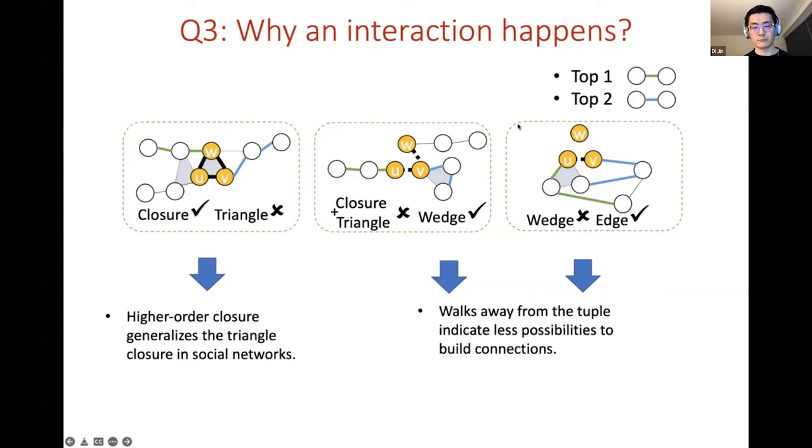On the other hand, if we see a lot of walks that start from node u and v and tend to jump away from these two nodes, it may indicate less probability or possibilities that the three nodes may build connection later. Like in the second figure here if we see a lot of such green or blue walks we know that wedge pattern is more likely to happen compared to either the closure pattern or the triangle pattern among these three nodes.